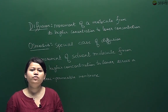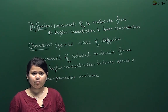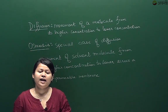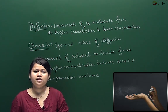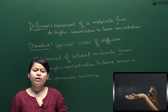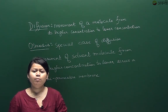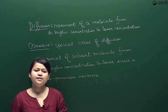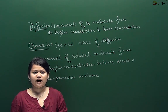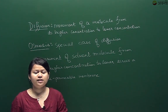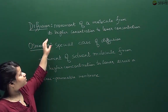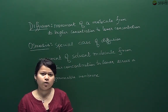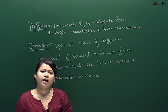Now let's look at two phenomena with respect to the plasma membrane. The first is diffusion. To understand diffusion, let's look at the example of a perfume being sprayed in a room. When you spray a perfume, the molecules of the perfume intermix with the air particles and you can sense the smell across the room. Diffusion is the process of movement of a molecule from its higher concentration to its lower concentration.